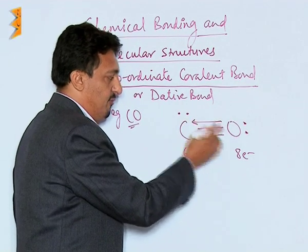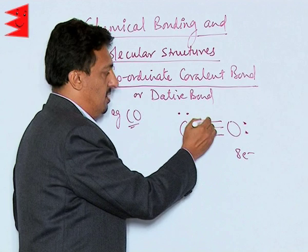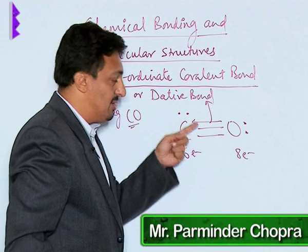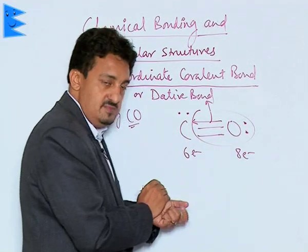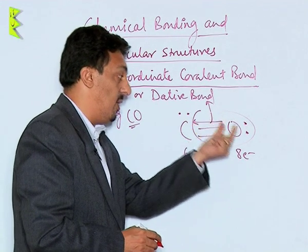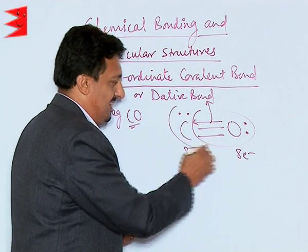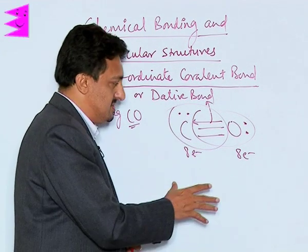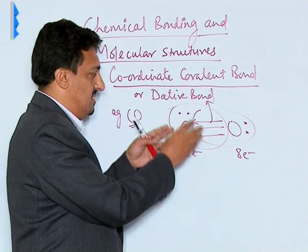The bond formed by the sharing of this lone pair — which oxygen contributed — is represented by drawing an arrow from donor towards acceptor. This third bond is called the dative bond or coordinate covalent bond. By doing so, oxygen still retains its two electrons since they are shared, so oxygen's octet remains complete. Carbon, having acquired these two electrons from oxygen, also gets its octet complete. Both atoms become stable and the molecule becomes stable.